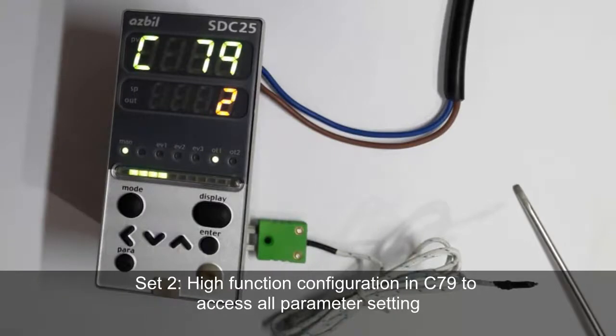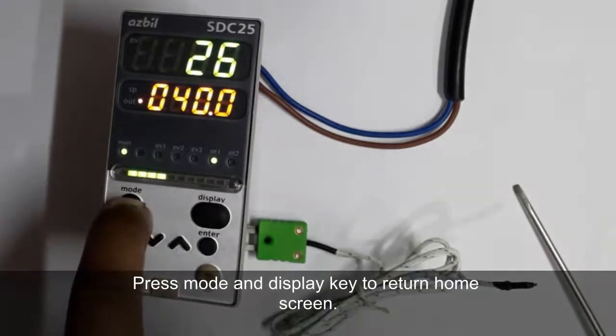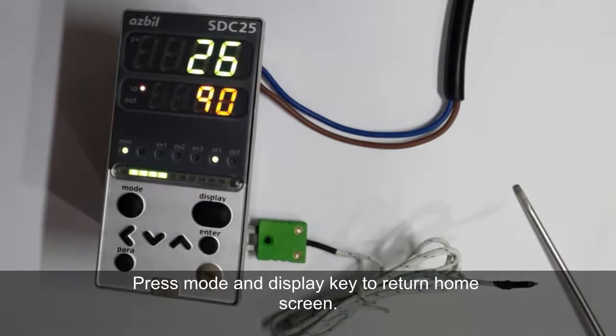Parameter set to high configuration setting. Now press the mode and display buttons together to return to the home screen. This is how you set the user level configuration.